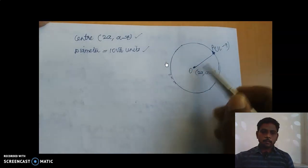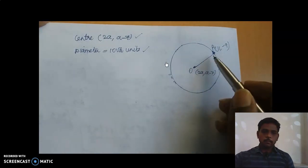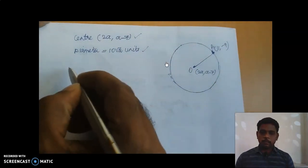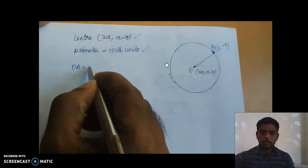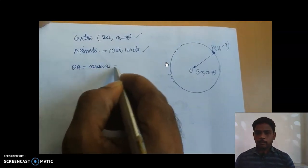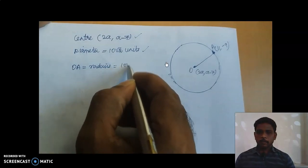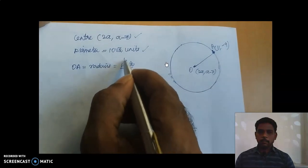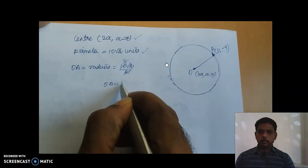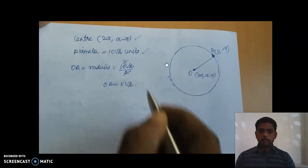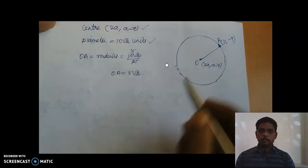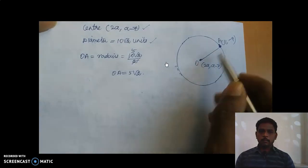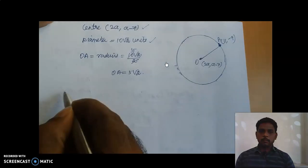What is given here? The centre of the circle is given and the diameter is 10√2 units. The circle passes through the point (11, −9). They are asking us to find the value of 'a'. O is the centre of the circle. The radius equals half of the diameter, that is 10√2 divided by 2, which simplifies to 5√2. Now we are going to use the distance formula between O and the point A.